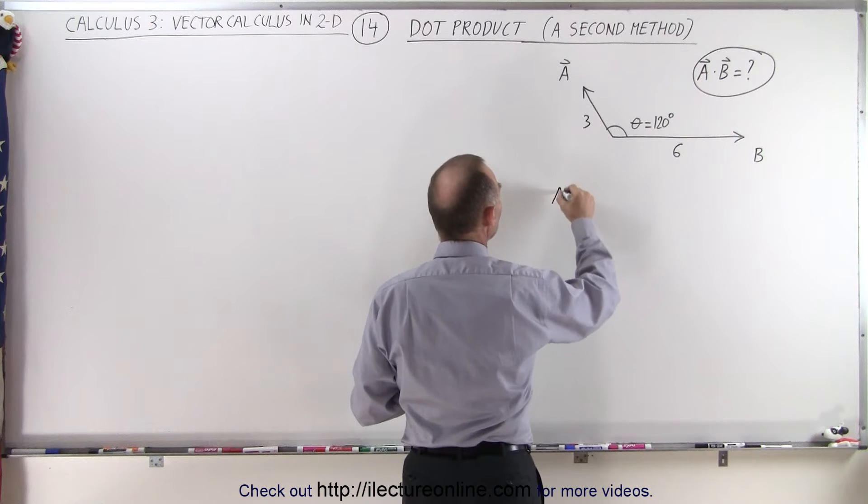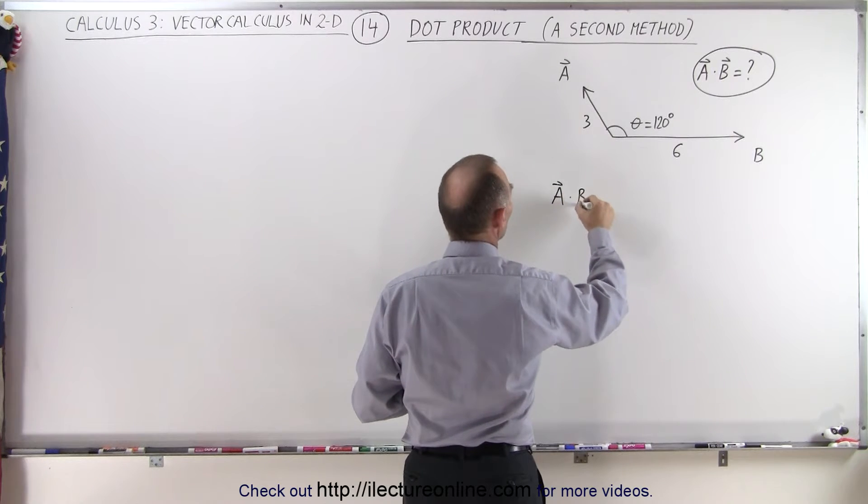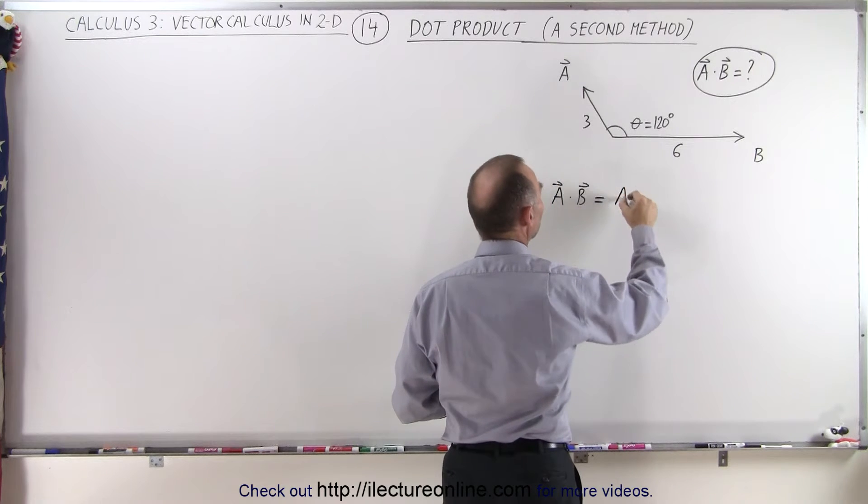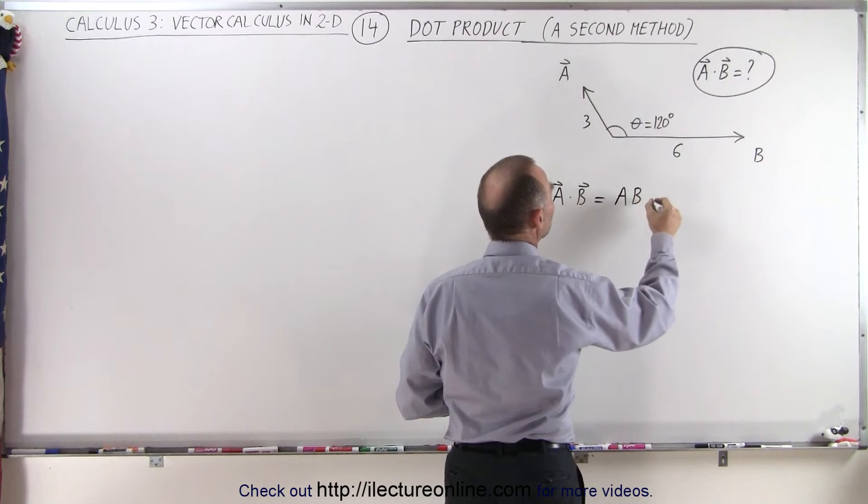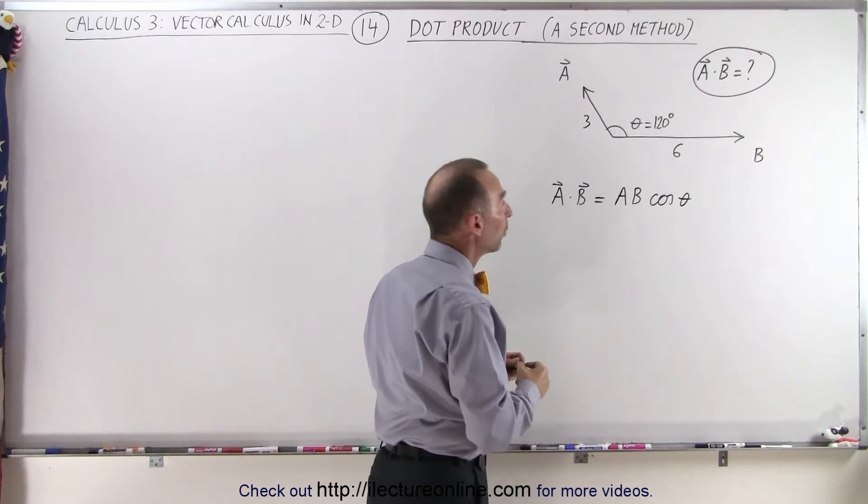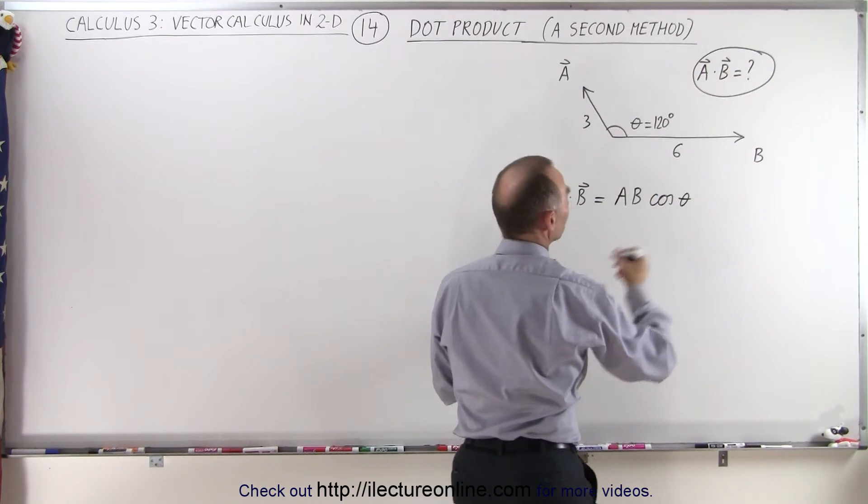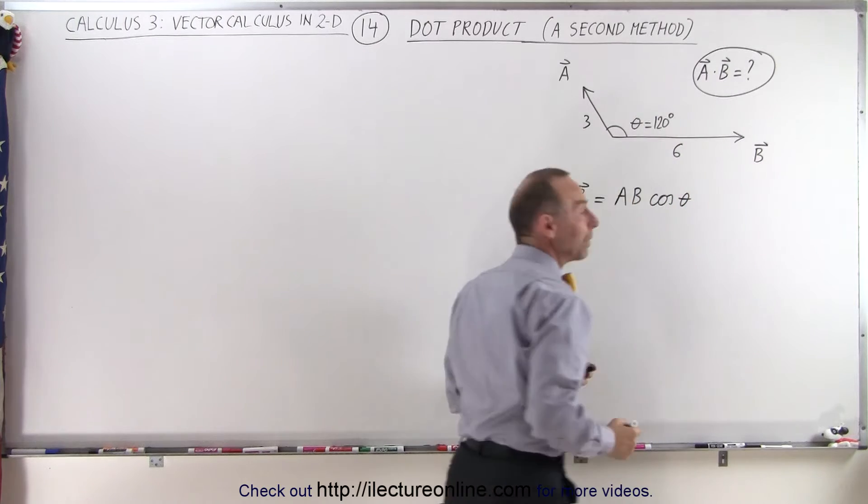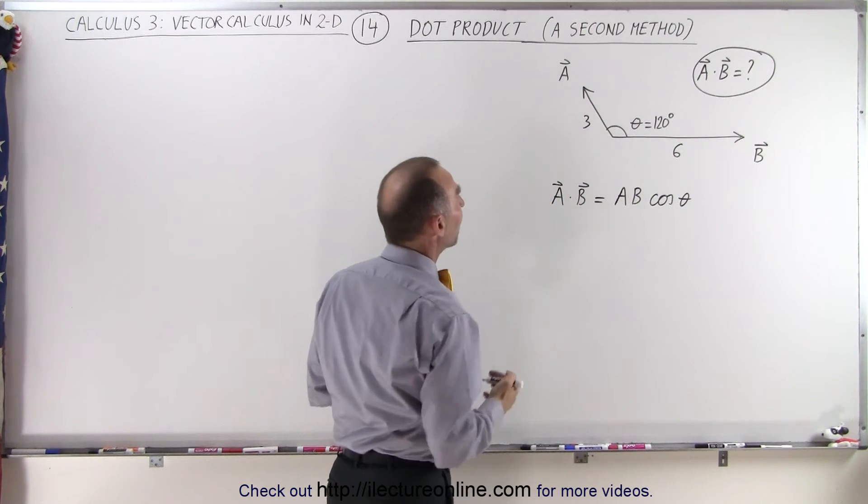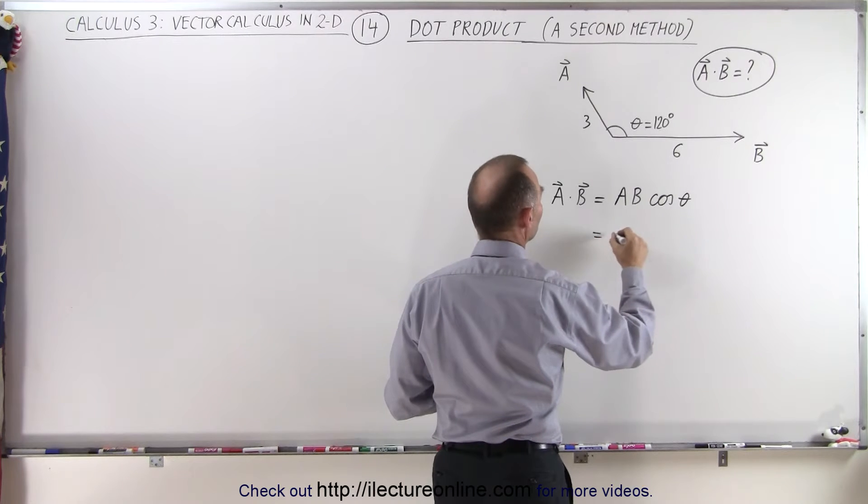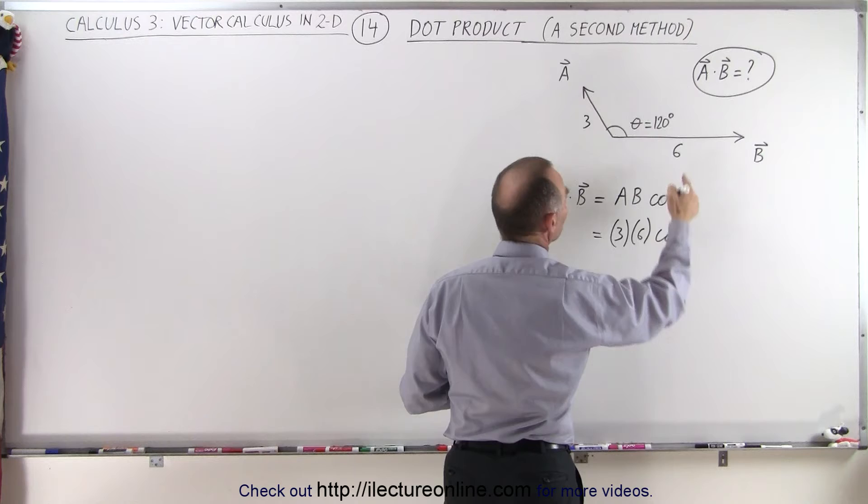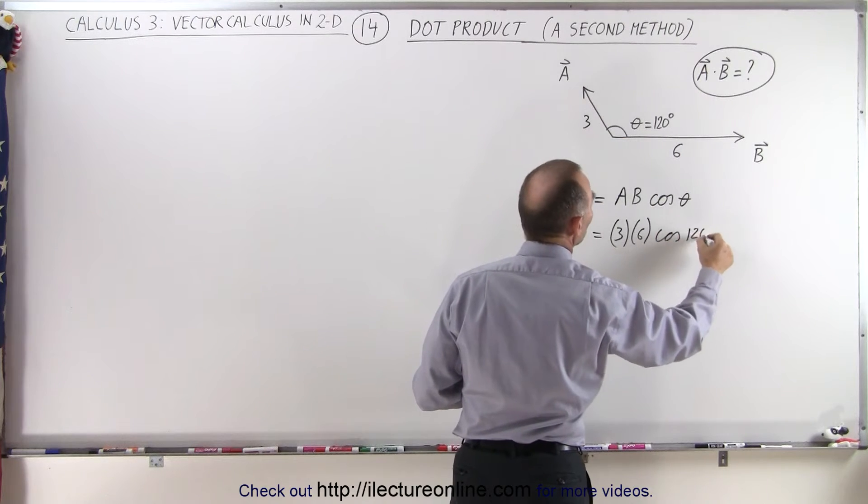We can say that A dot B, the dot product or scalar product between the two vectors A and B, is equal to the magnitude of A times the magnitude of B times the cosine of the angle between them. Now, we're given the magnitude of B, and of course I should put a little arrow on top of that because it's indeed a vector. The magnitude of B is 6, the magnitude of A is 3, so this becomes equal to 3 times 6 times the cosine of the angle, which in this case is 120 degrees.